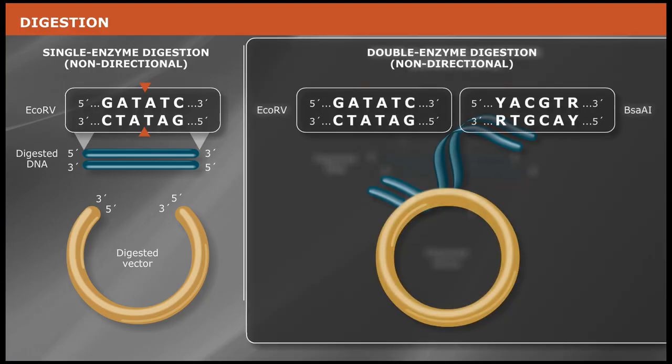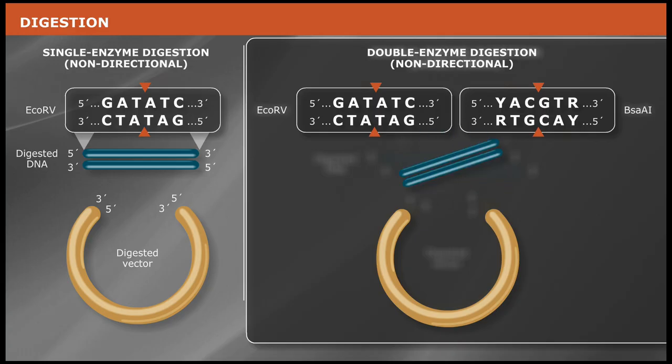Use of two different enzymes that produce blunt ends creates a non-directional cloning strategy. If you are using a single restriction enzyme, or two enzymes that produce blunt ends, additional screening may be required.